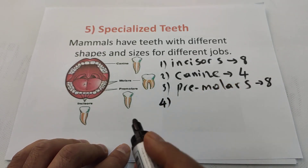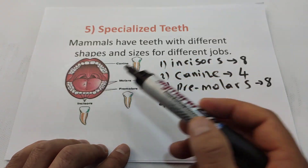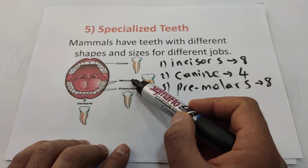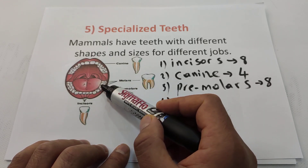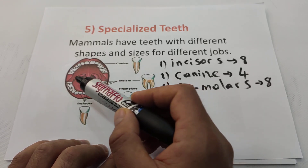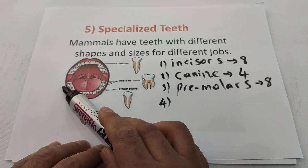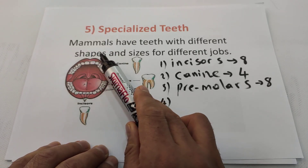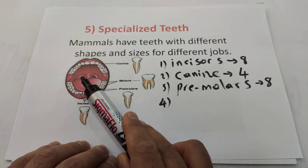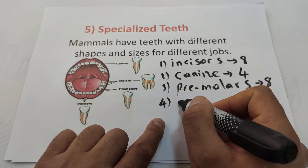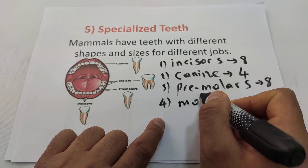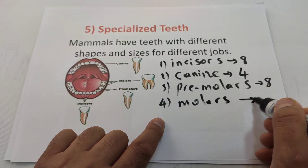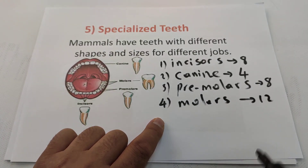The fourth kind of teeth are called molars. There are six up and six down, for a total of twelve molar teeth.